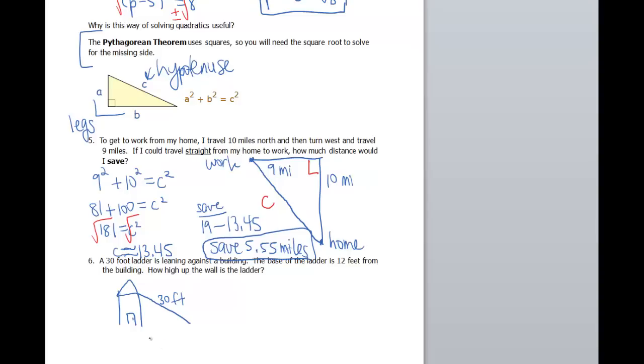The base of the ladder is 12 feet from the building. So this distance here is 12. And look at that, I just made myself a right triangle. But this time I'm given a hypotenuse and I'm giving one of my legs. So I'm missing the other leg. And this question makes sense then, because it says, how high up the wall is the ladder? That's a leg of my triangle.